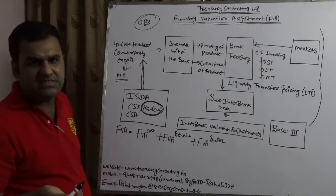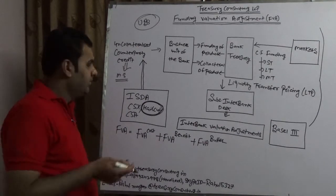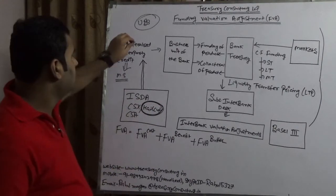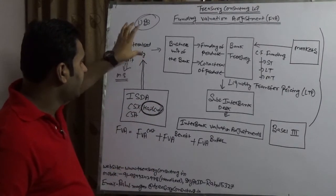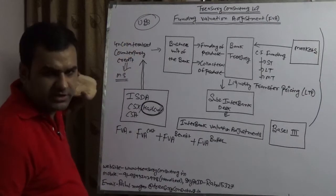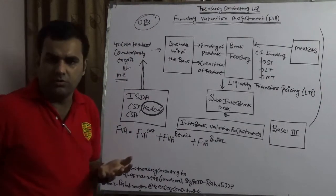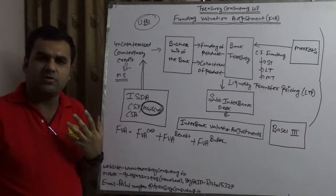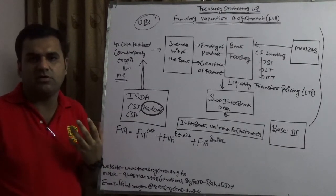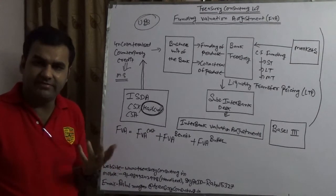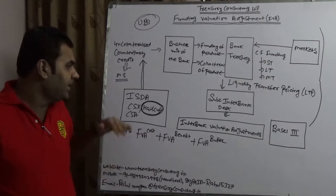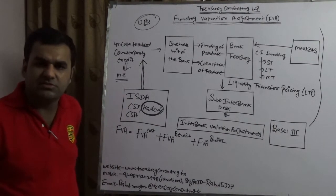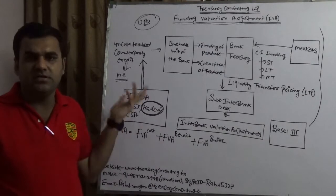One way CSX can be designed is that Microsoft will pledge some deposits to UBS, and these deposits will continue to earn interest while held in an escrow account. In case anything happens — for example, the mark-to-market goes high, or collateralization fails, or there is a credit risk event, or Microsoft is facing CVA — this escrow will be invoked.